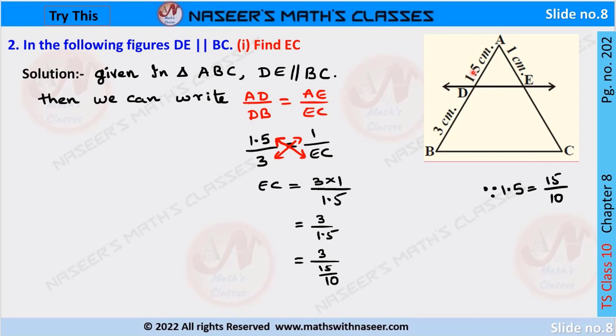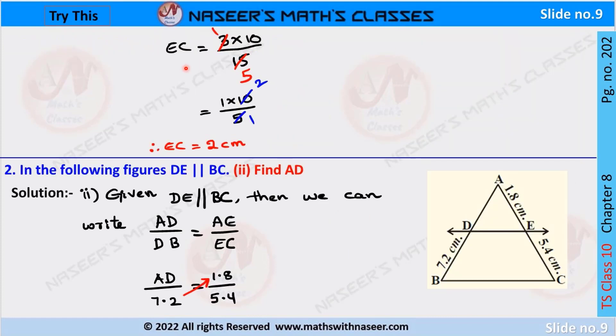Now we substitute the given values: 1.5/3 = 1/EC. After cross multiplication, EC = 3×1/1.5. Here, 1.5 is written as 15/10, so EC = 3÷(15/10) = 3×10/15. We cancel 3 and 15 into 5, getting 1×10/5. Then cancel 10 into 2 and 5 into 1, so EC = 2 centimeters.